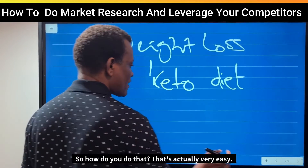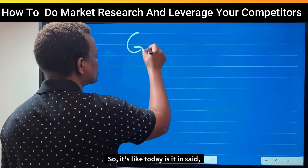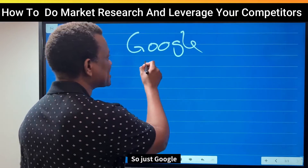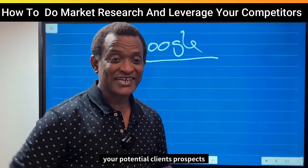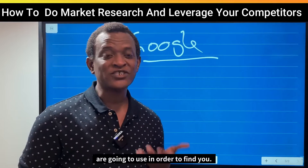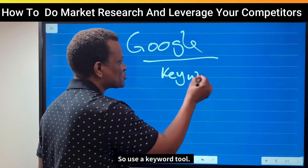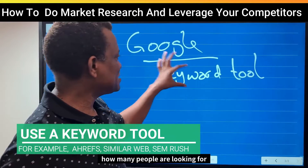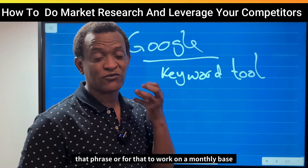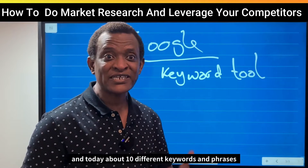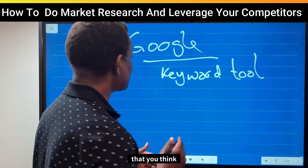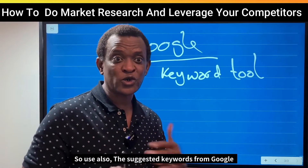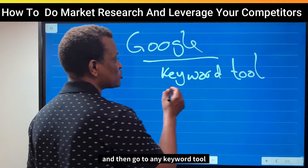So how do you do that? It's actually very easy — you just Google that. You search the keywords that you think potential clients or prospects are going to use in order to find you. Use any keyword tool and find out how many people are looking for that phrase or keyword on a monthly basis. Try about 10 different keywords and phrases that you think your customers are using.